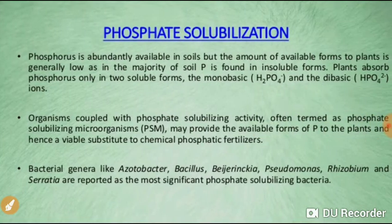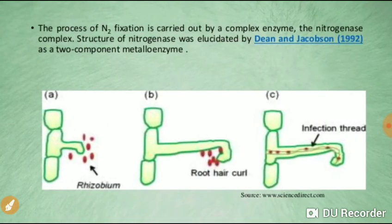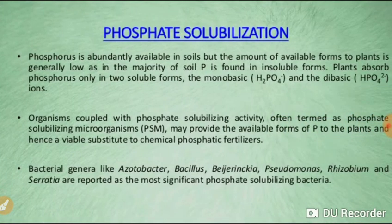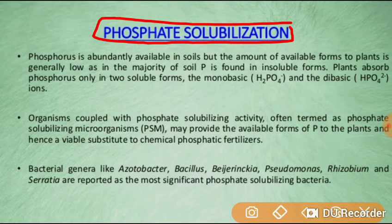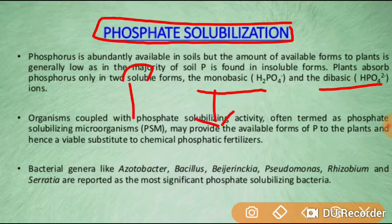The next direct method of plant growth promotion is phosphate solubilization. Phosphorus is abundantly available in soil, but the amount in available form to plants is generally low, as the majority of soil phosphate is found in insoluble forms. The plant can only utilize soluble forms of phosphate.